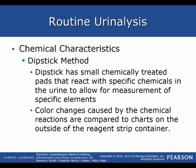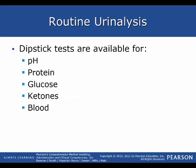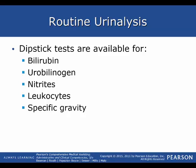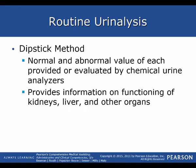The dipstick has small chemically treated pads that react with specific chemicals in the urine to allow measurement of specific elements. Color changes caused by the chemical reactions are compared to charts on the outside of the reagent strip container. The chemical elements tested include pH, protein, glucose, ketones, blood, bilirubin, urobilinogen, nitrates, leukocytes, and specific gravity. Normal and abnormal values are evaluated by a chemical urine analyzer, providing information on the functioning of the kidneys, liver, and other organs.